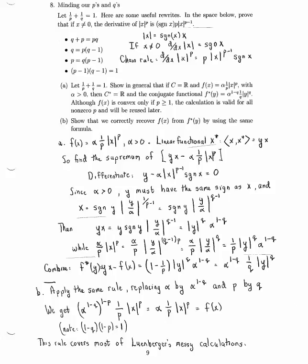This is my own clever rewrite of a formula that Luenberger independently derives in several different places. I'm going to express f of x as alpha over p times the absolute value of x to the pth power, where alpha is positive.